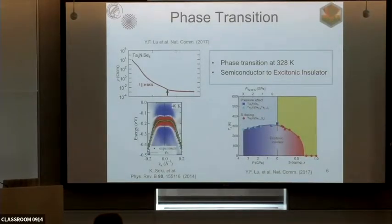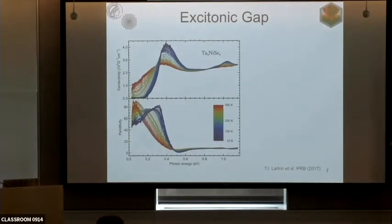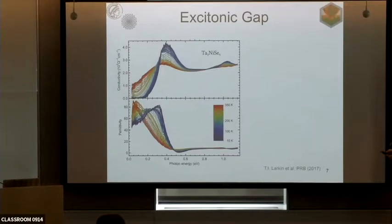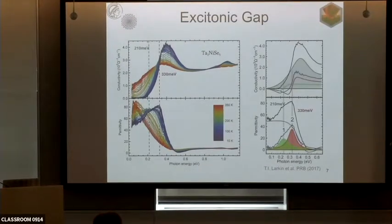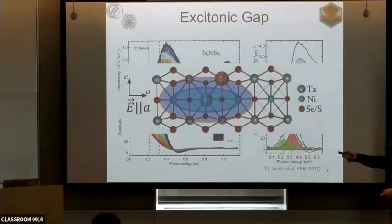Important for our measurements is the opening of an optical gap at low temperatures in Ta2NiSe5. Sascha showed us very nicely that in the sulfide compound one can see Fano-like features which may be hidden in the selenide, but comparing the two reveals two Fano-resonant features, interpreted as transferring spectral weight from the low-temperature range to these peak-like features. The two exciton peak energies are 210 and 330 meV, interpreted as polaronic-type complexes in this system.